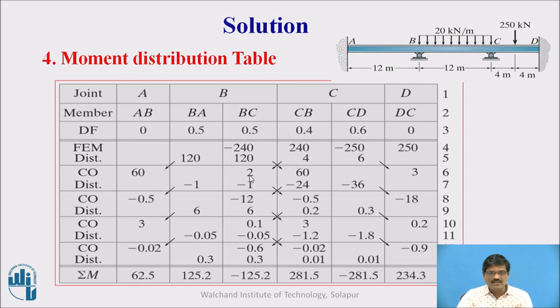Now once the carry over is complete, then the balancing gets disturbed again. You can see here. Now this 2 is an additional moment come to joint B. So therefore this 2 is to be balanced. Therefore minus 2 is to be applied. Out of that minus 2, 50% is transferred here, 50% is transferred here.